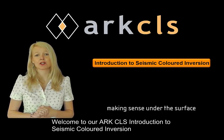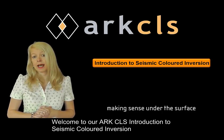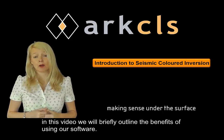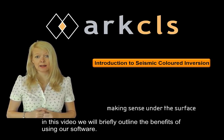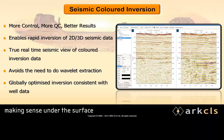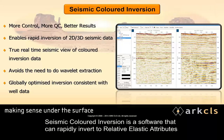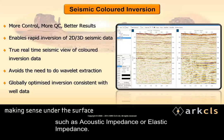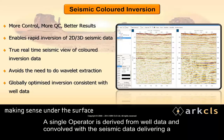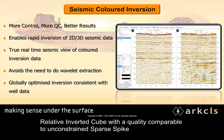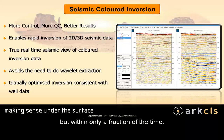Welcome to our ArcCLS introduction to seismic coloured inversion. In this video we will briefly outline the benefits of using our software. Seismic coloured inversion is a software that can rapidly invert to relative elastic attributes such as acoustic impedance or elastic impedance. A single operator is derived from well data and convolved with the seismic data, delivering a relative inverted cube with a quality comparable to unconstrained sparse spike but with only a fraction of the time.